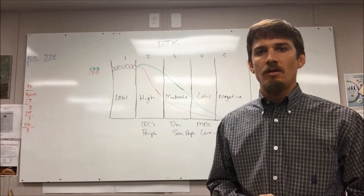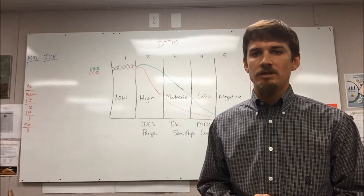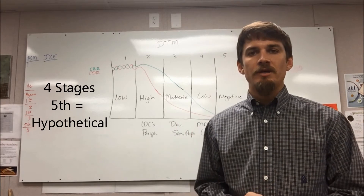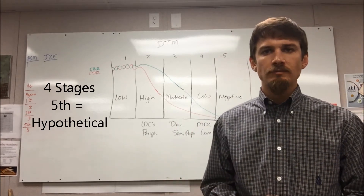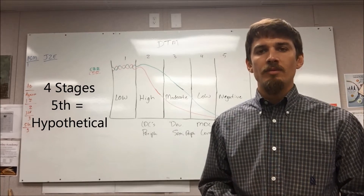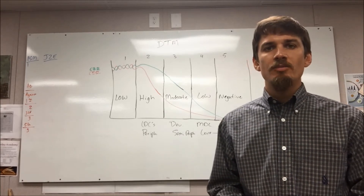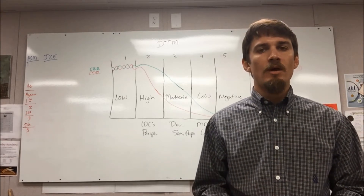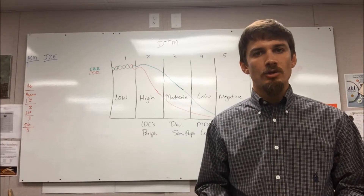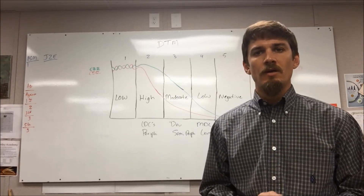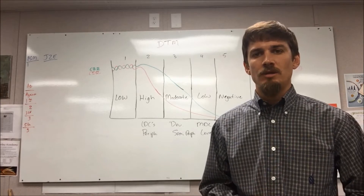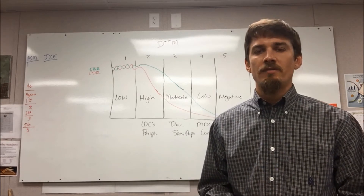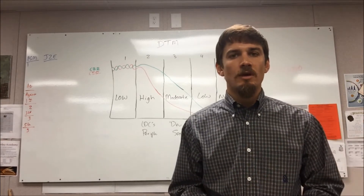On the model behind me we have five different stages. Most demographic transition models you look at are going to have four stages, but I've added in the fifth stage because even though it's currently considered hypothetical, some experts say that potentially in the future we could see this fifth stage come about — potentially in countries like Japan and Germany where birth rates are really low.